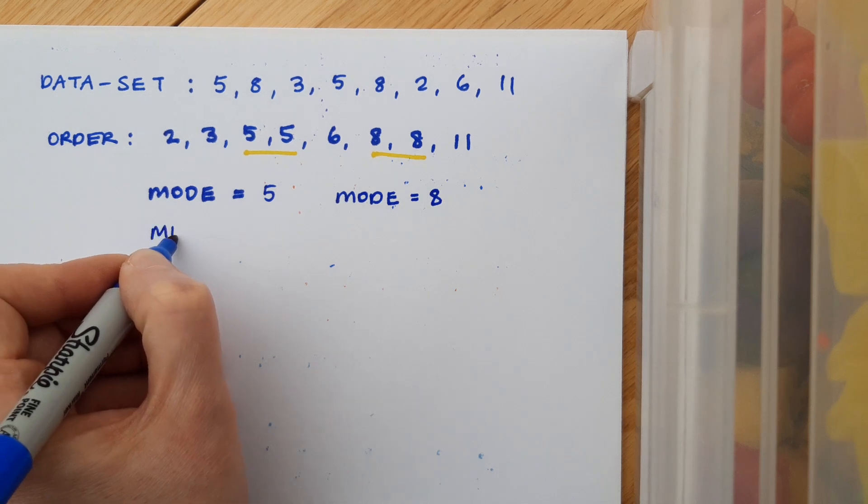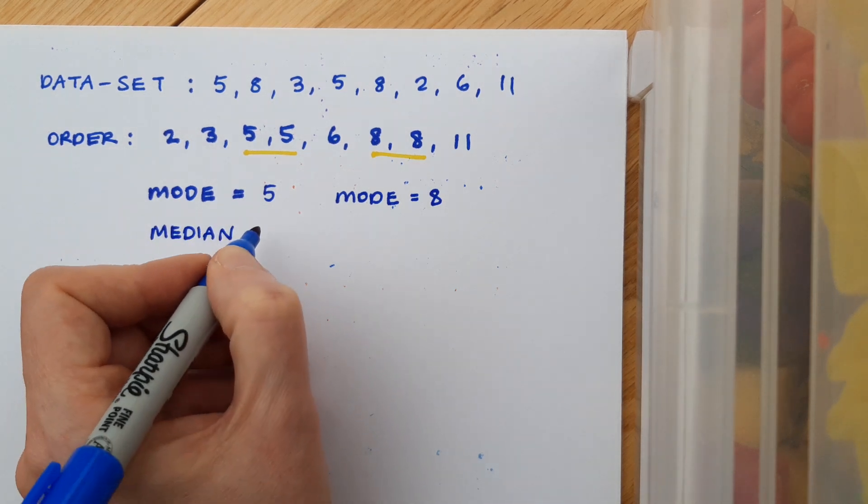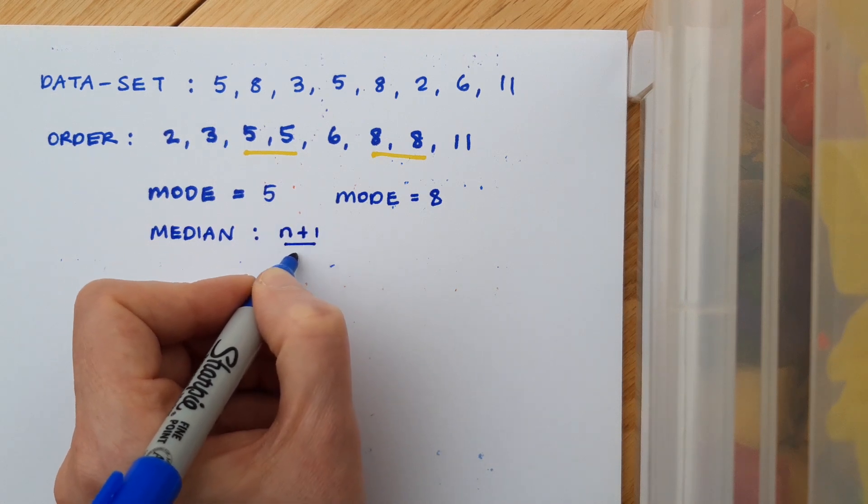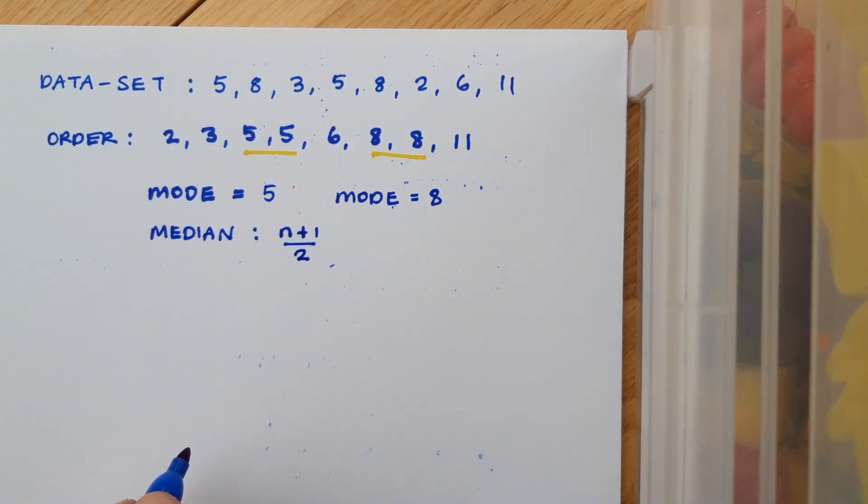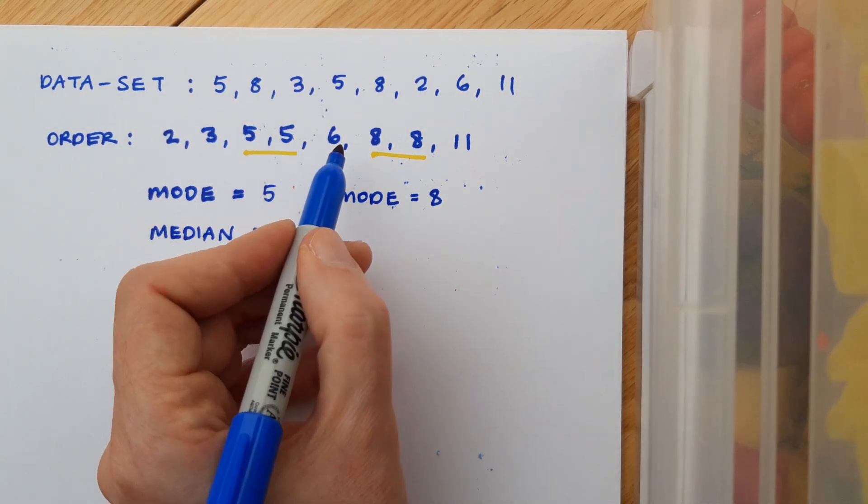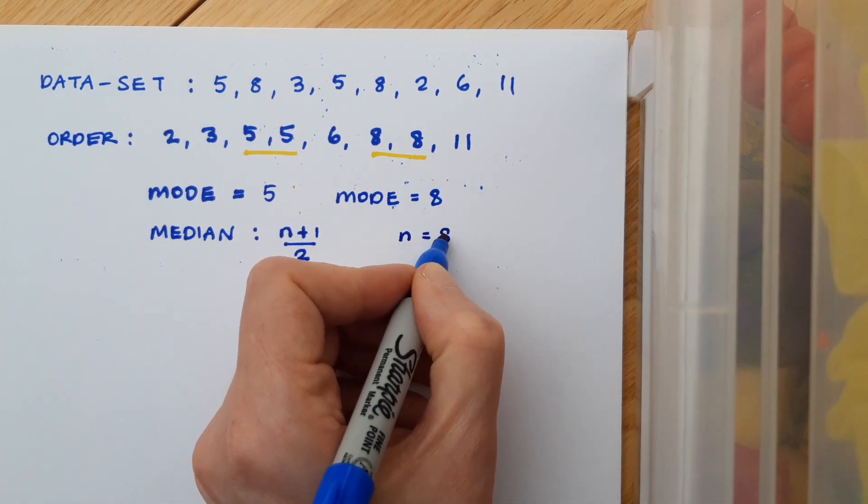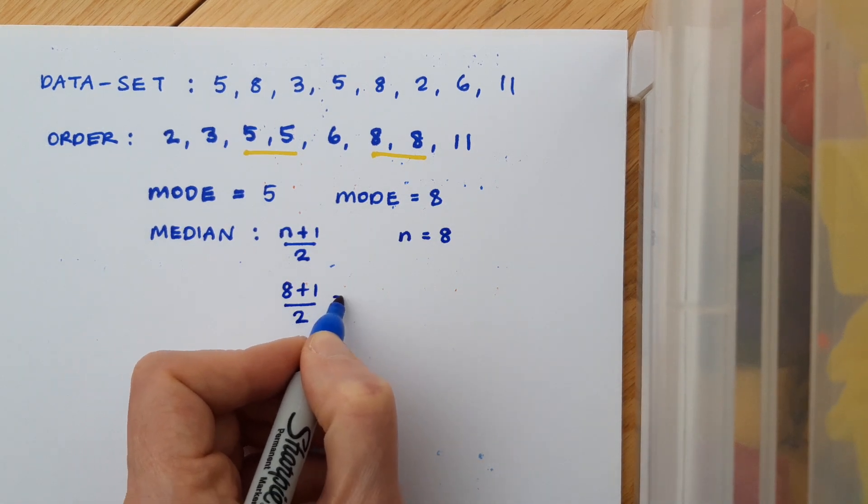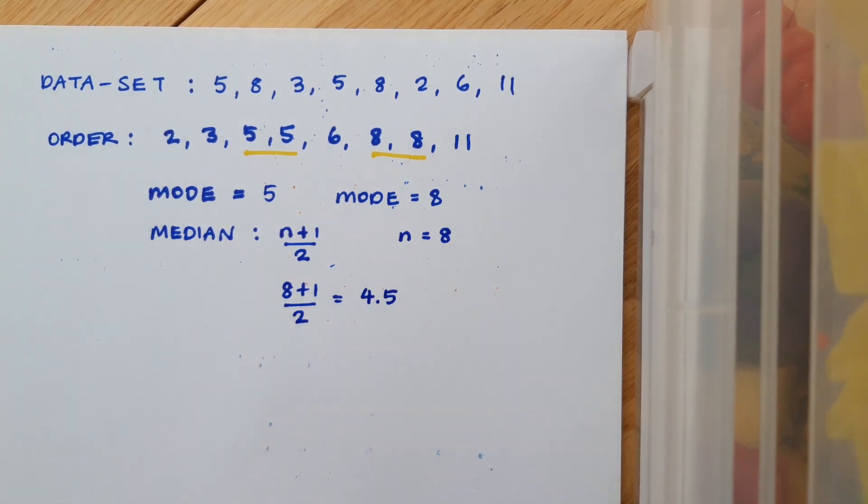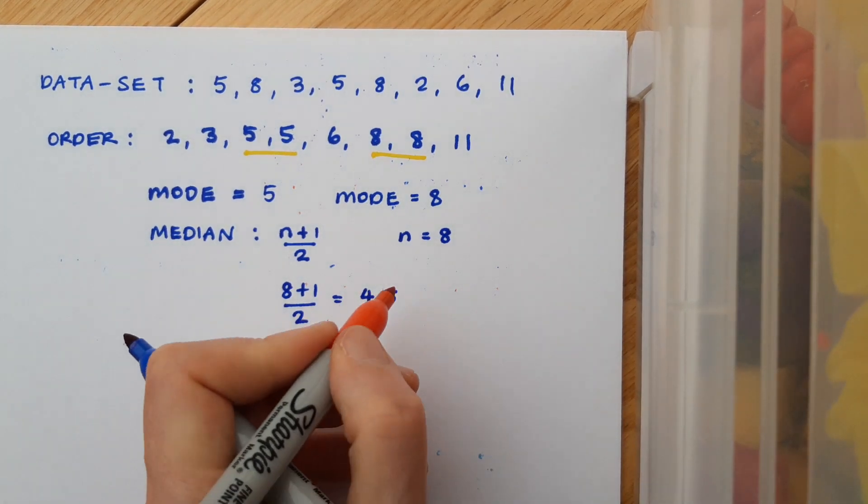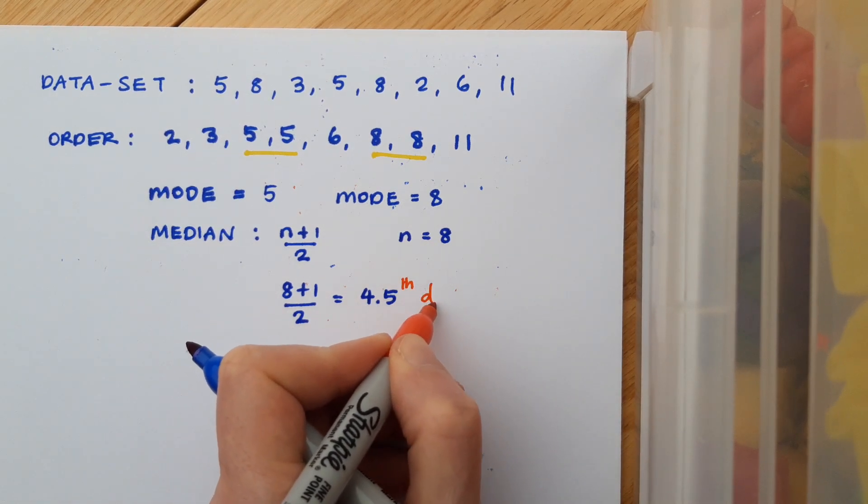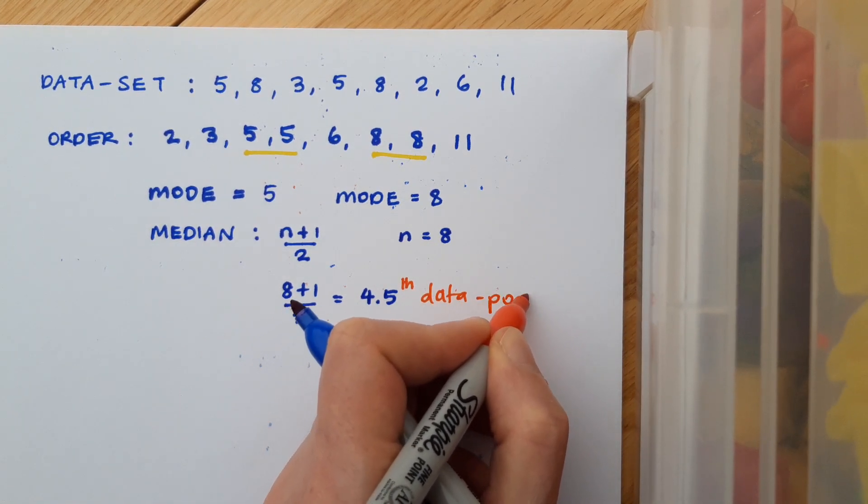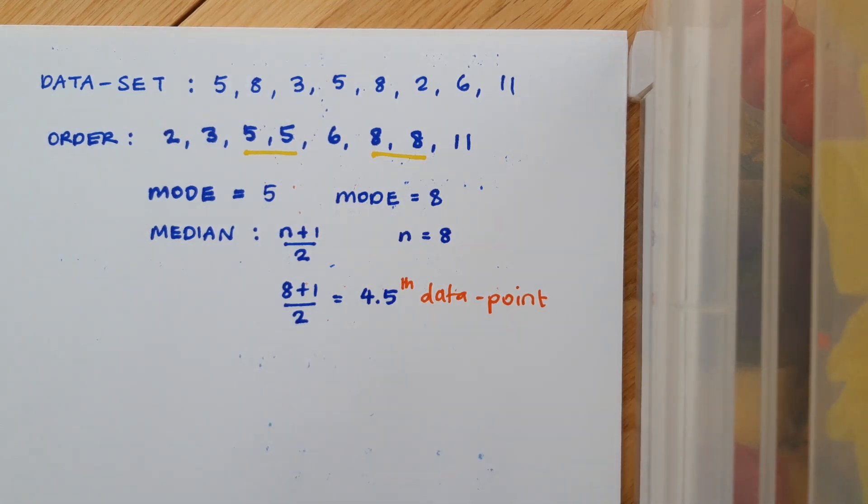Next, I want to calculate median. So median is the middle piece of data. So again, we're going to use n plus 1 over 2 to figure out where that is. n is just the number of data points: 2, 4, 6, 8. n in this case is 8. So I'm going to calculate 8 plus 1 over 2, which is 4.5. Now, that means I'm looking for the 4.5th data point. But that sounds a bit silly. There isn't a 4.5th data point. So what I'm going to do instead is I'm going to find the fourth data point and the next one up, the fifth data point, and then I'm going to average the two of those.